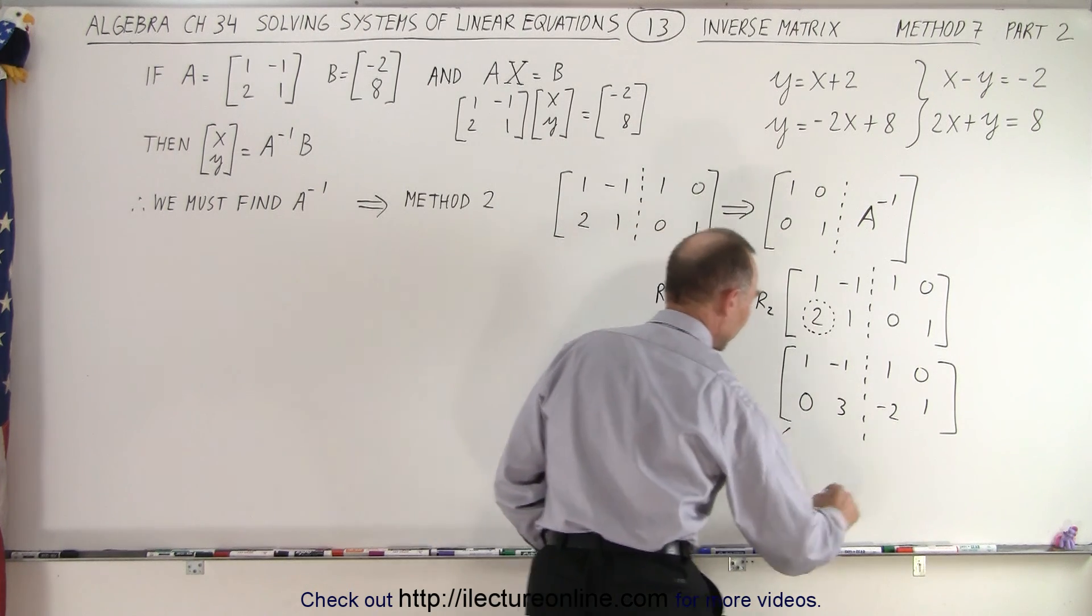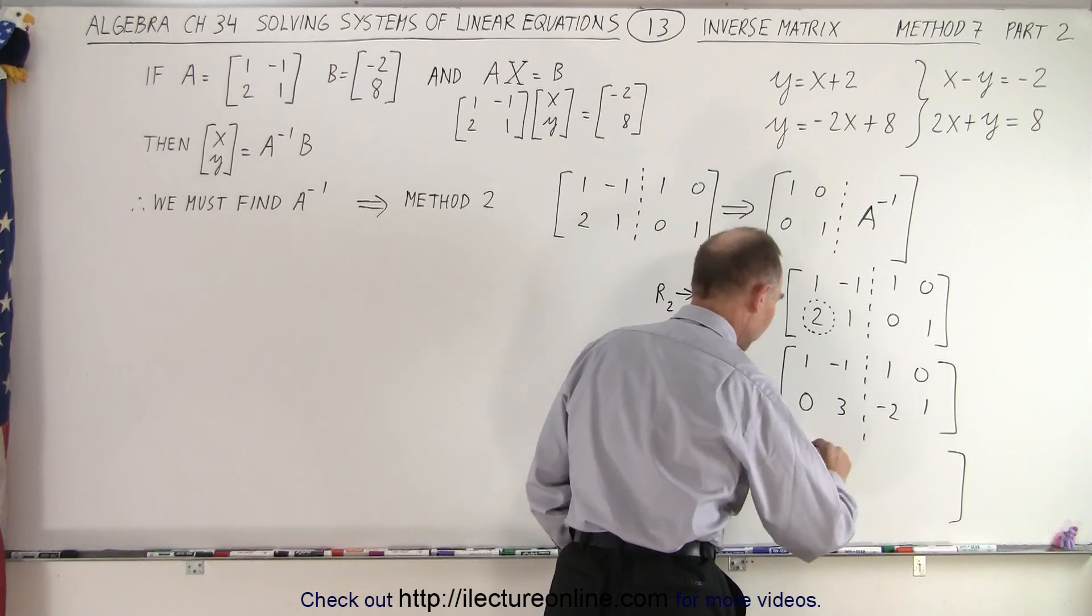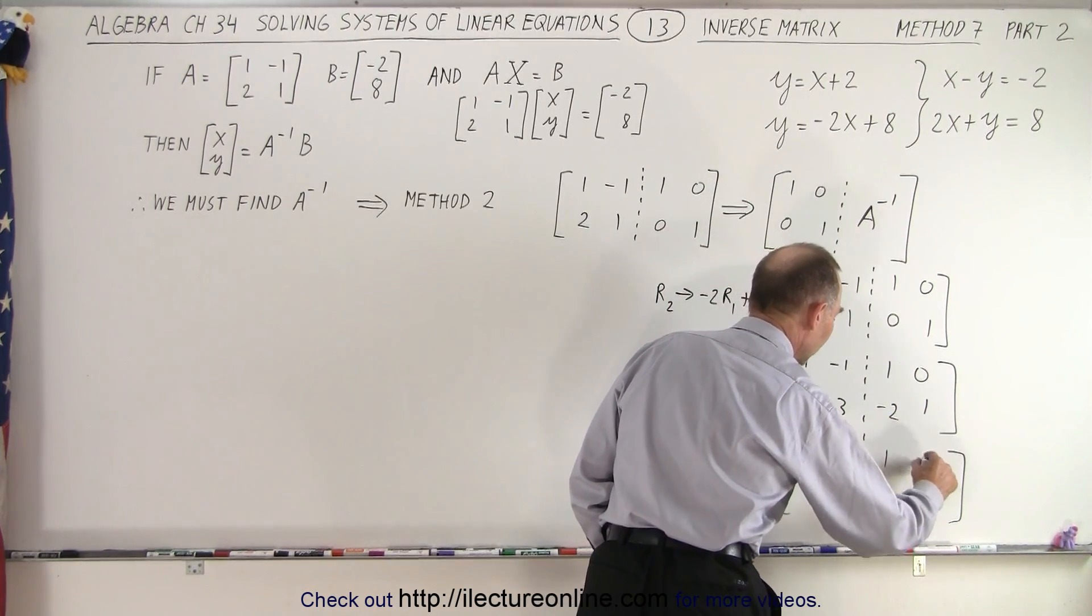So when we do that, we get the following. Notice, the top row doesn't change. So we get 1, negative 1, 1, and 0.